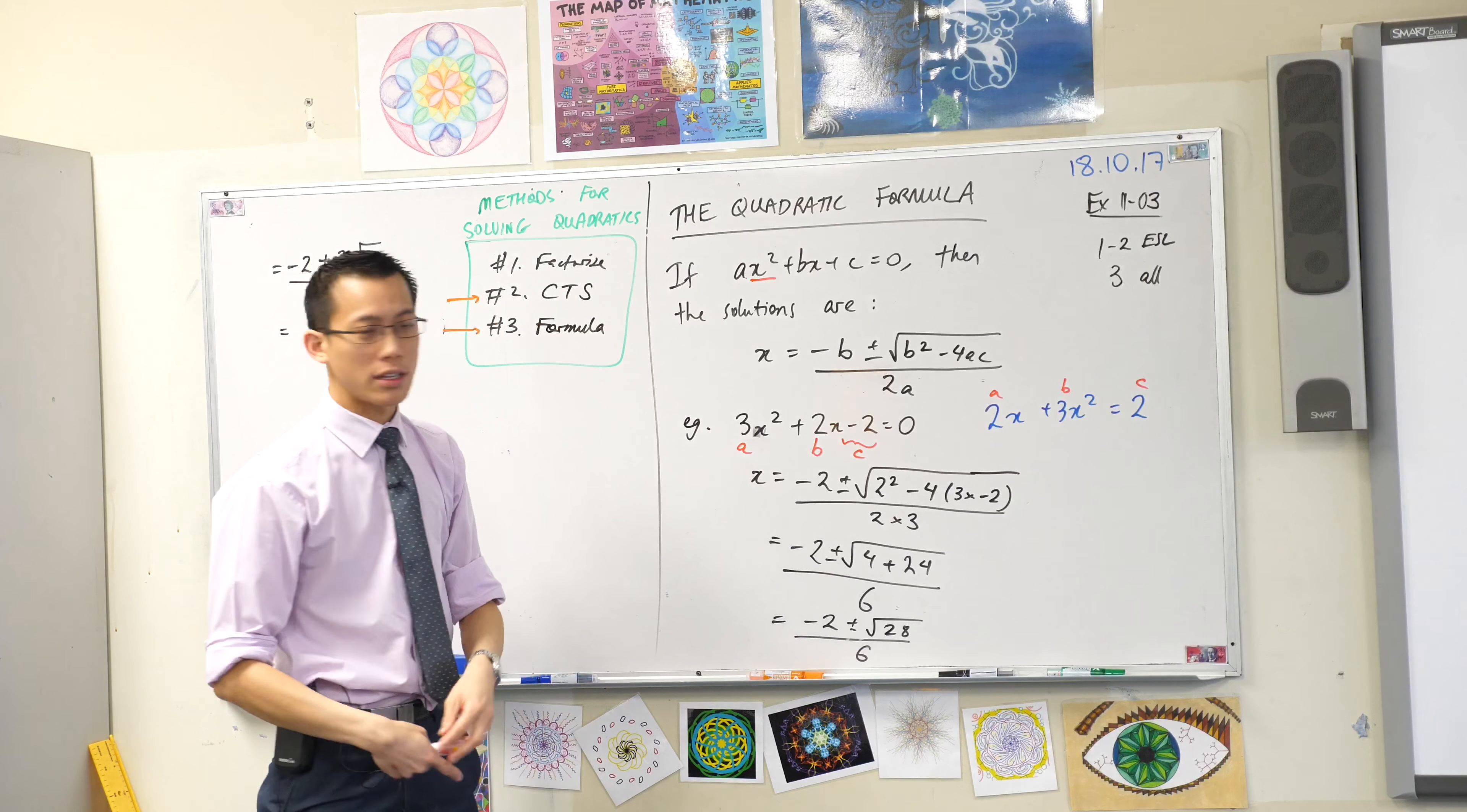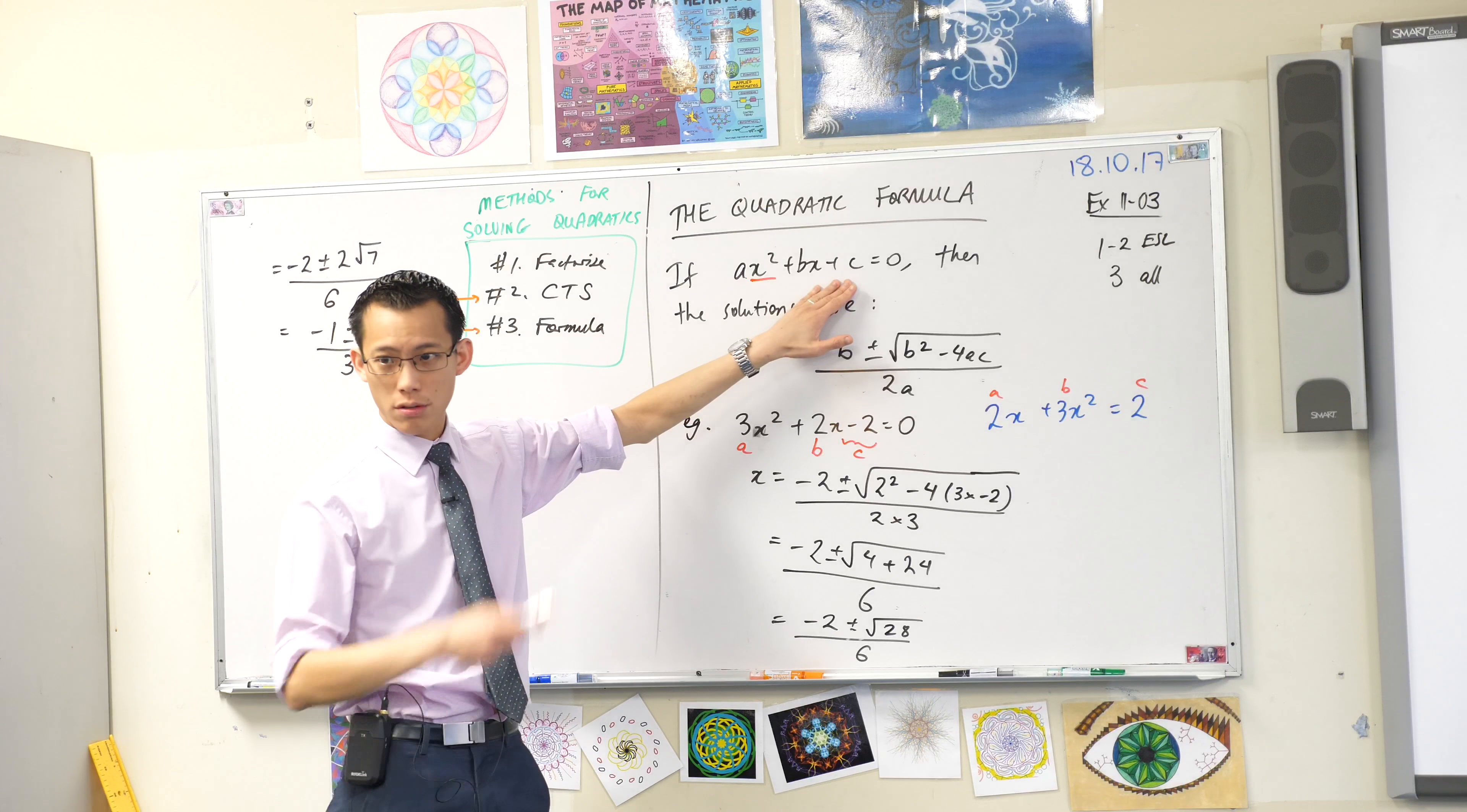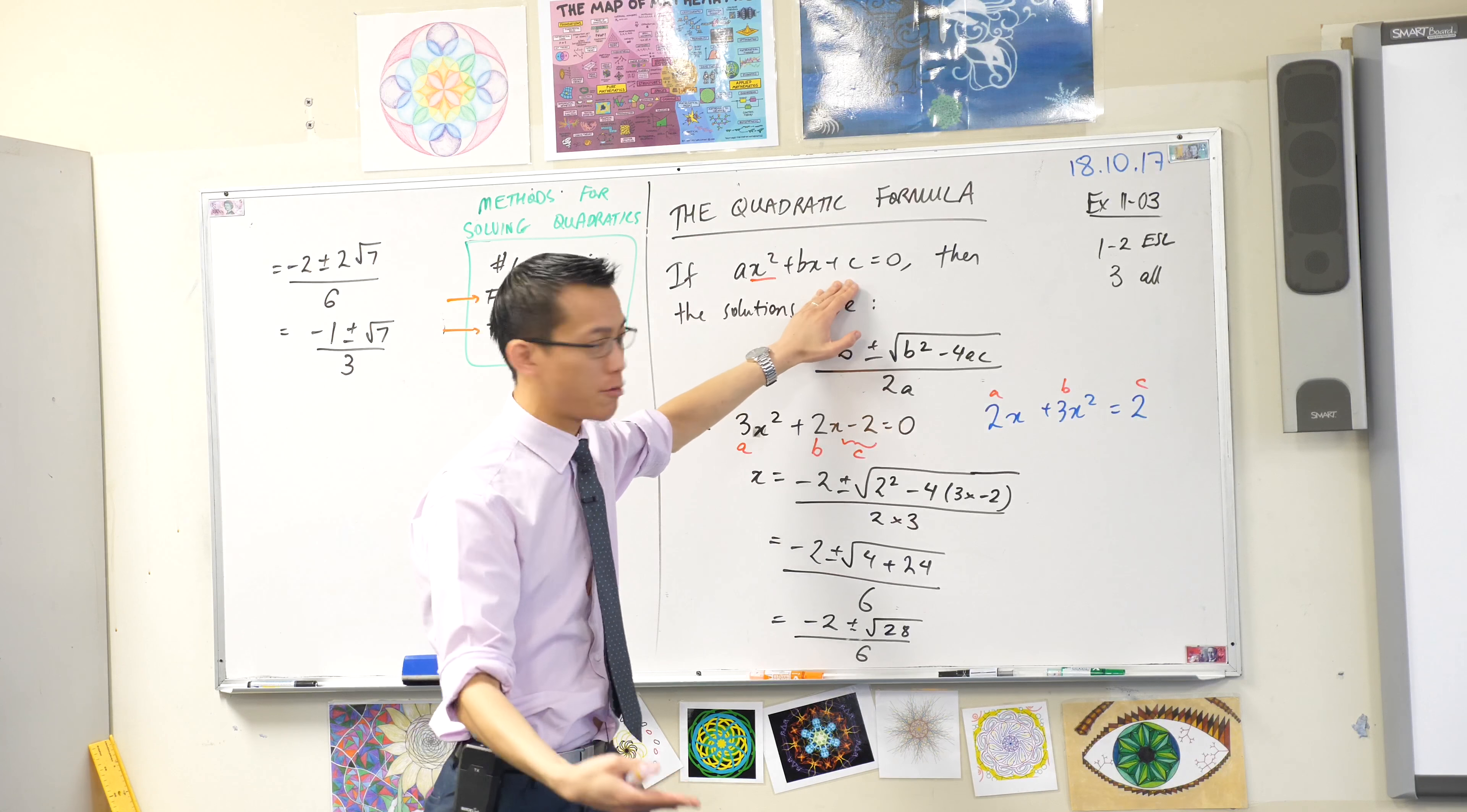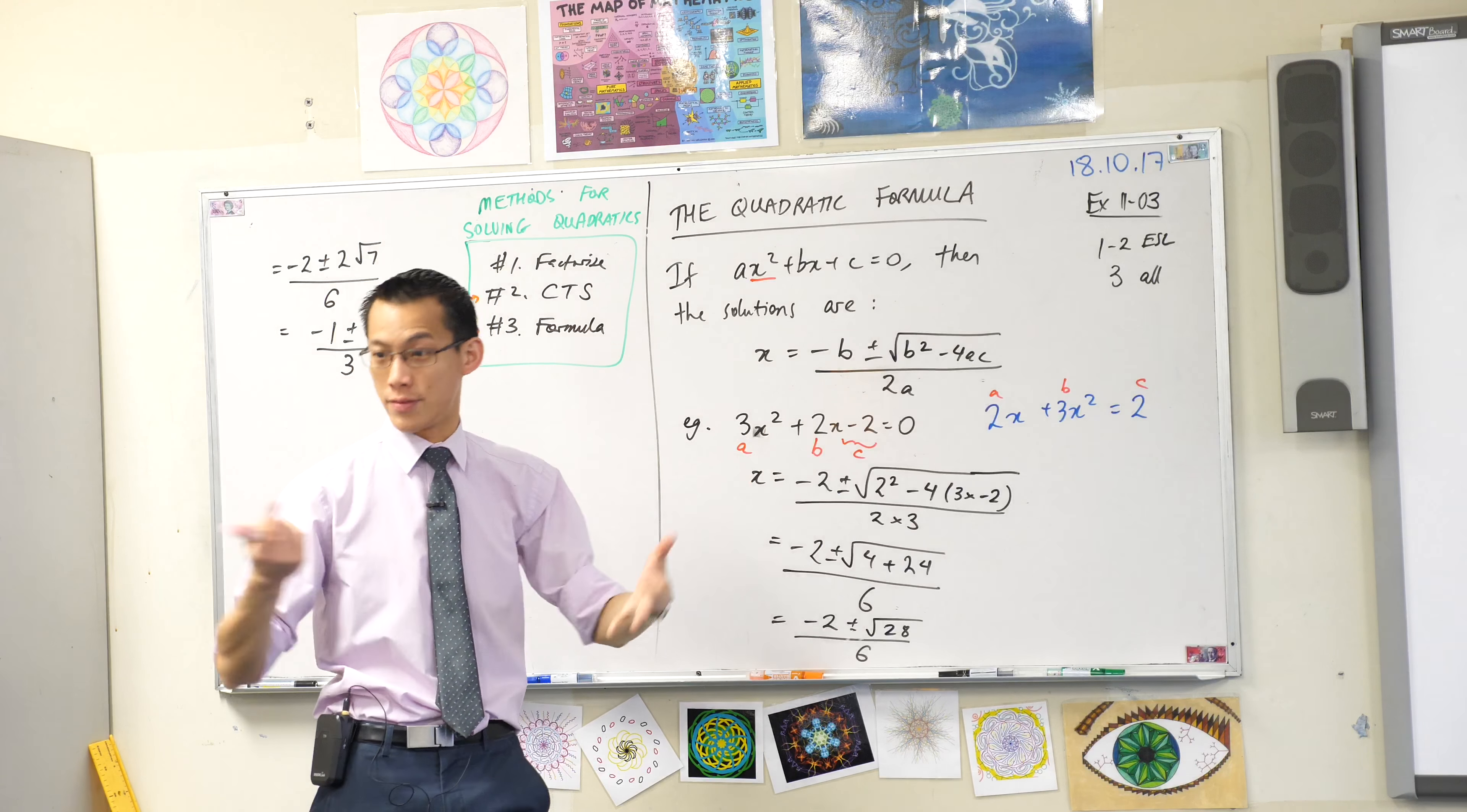Secondly, have a look at c. What makes c, c? Have a look. It's by itself. It's what we call the constant, which is convenient. Like it's the third letter of the alphabet. That's why it's c, but c also stands for constant in this case.